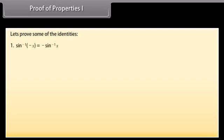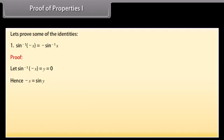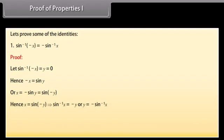Let's prove some of the identities. First, sin⁻¹(−x) = −sin⁻¹ x. Proof: Let sin⁻¹(−x) = y. Hence −x = sin y, or x = −sin y = sin(−y). Hence x = sin(−y), which implies sin⁻¹ x = −y, or y = −sin⁻¹ x. Similarly, tan and cosec identities can also be proved.